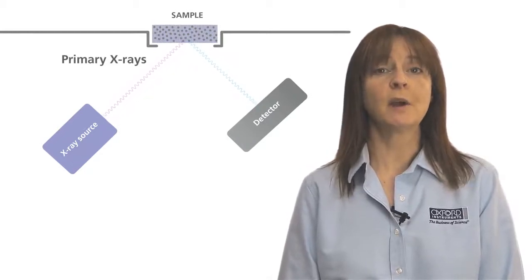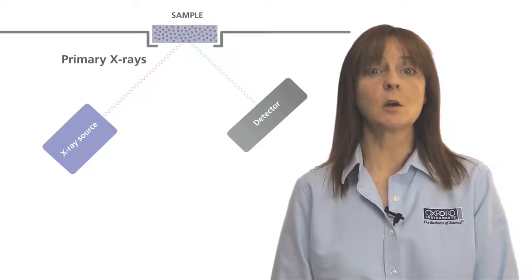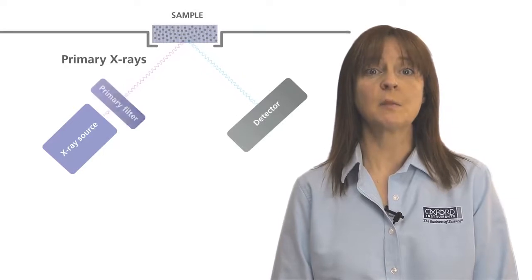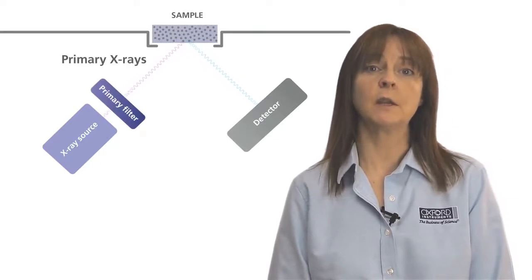Primary X-rays are generated by the source and directed at the sample's surface, sometimes passing through a filter to modify the X-ray beam.